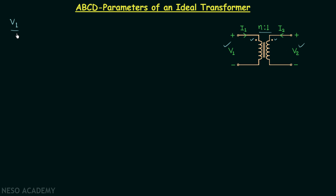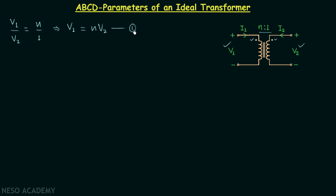V1 over V2 will be equal to N over 1, and from here we can say that the voltage on the primary side, V1, is equal to N times the voltage on the secondary side. Let us call this equation number one.